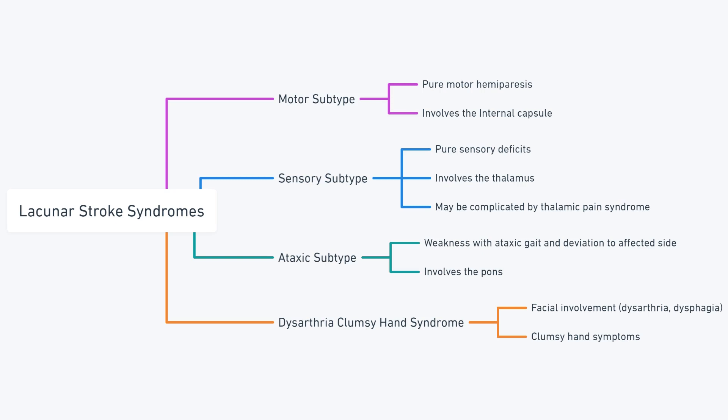The ataxic subtype involves the pons. This results in weakness with an ataxic gait and deviation to the affected side.